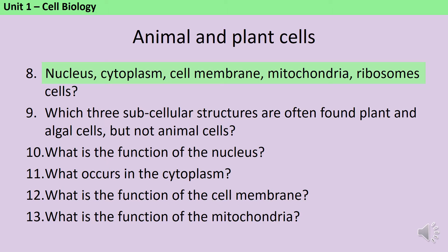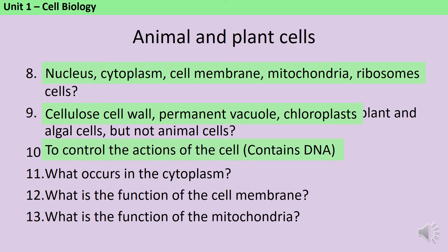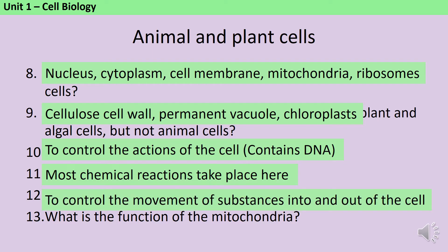In addition to this, plant and algal cells usually have a cell wall made of cellulose, a permanent vacuole and chloroplasts. The nucleus exists to control the actions of the cell and it contains the DNA. Most chemical reactions take place in the cytoplasm. The cell membrane controls the movement of substances into and out of the cell, while the mitochondria is the site of aerobic respiration.